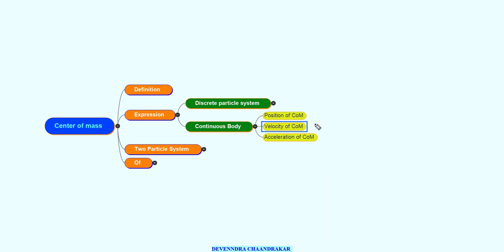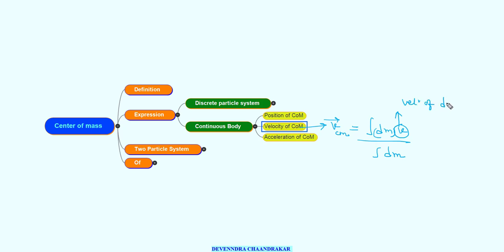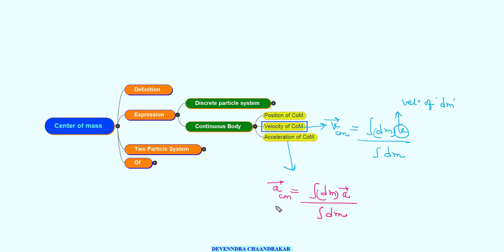For the velocity of center of mass of a continuous body, v_cm = (∫ dm·v) / (∫ dm), where v is the velocity of dm. Similarly, the acceleration of center of mass is a_cm = (∫ dm·a) / (∫ dm).